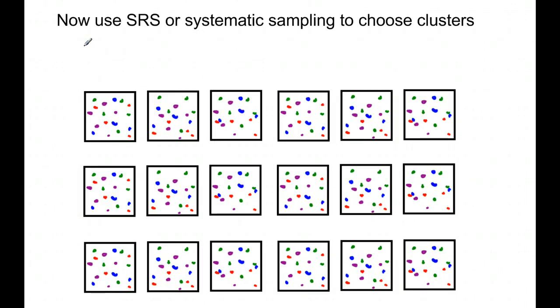So once you decided how your clusters are picked and you decided that they're all fairly well mixed or heterogeneous groups, then you could use an SRS or a systematic sampling technique to choose which clusters to ask.